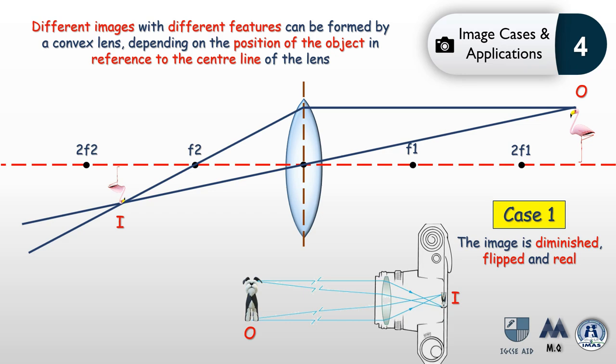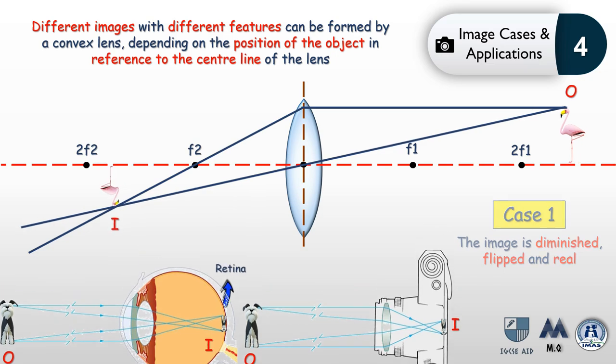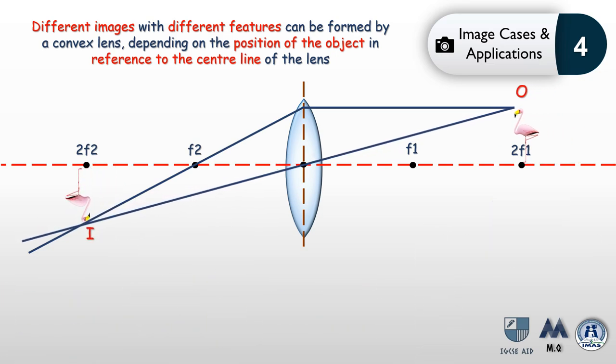Case 1 is used in cameras, where large objects produce a smaller image, and also naturally in our eyes — the retina acts as the screen where light falls and the brain translates these light signals into images. As we push the object closer to the lens toward 2f1, the image moves further away and reaches 2f2 on the other side.